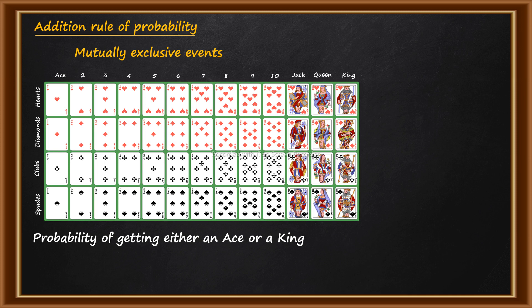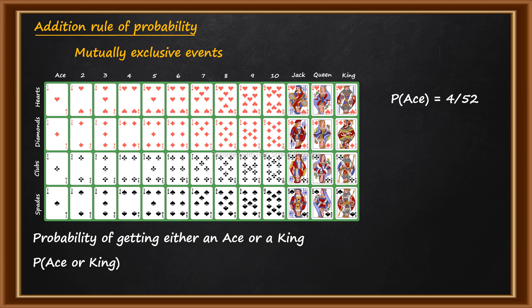Let us check the probability of each event separately. In the pack of 52 cards, there are 4 Aces. So probability of getting an Ace is equal to 4 by 52. Similarly, there are 4 Kings in the pack of 52 cards, so probability of getting a King is also 4 by 52.